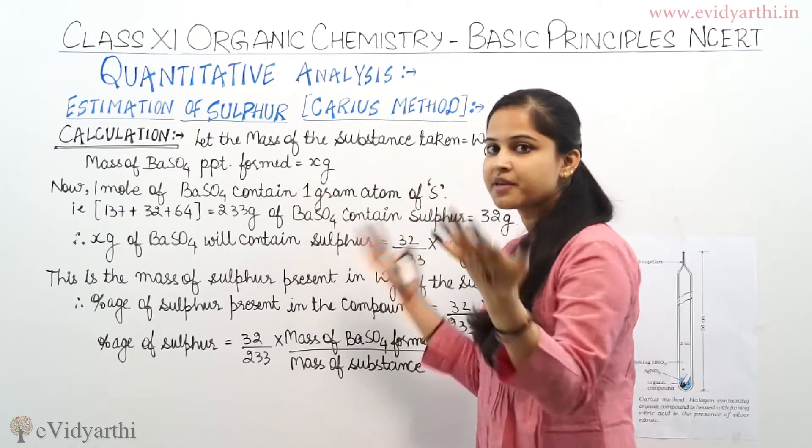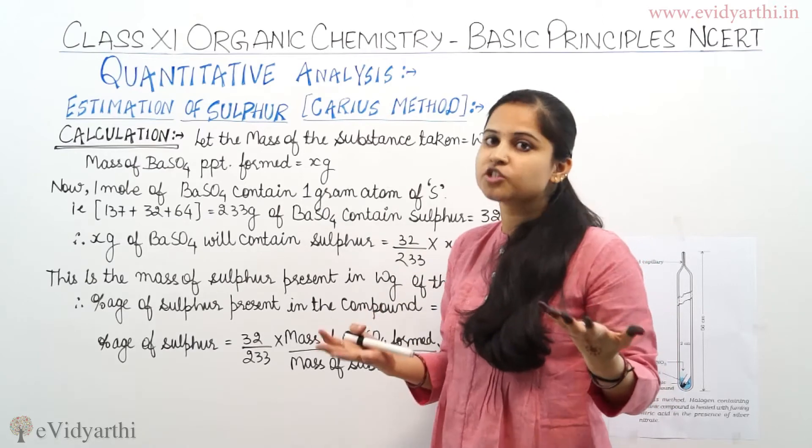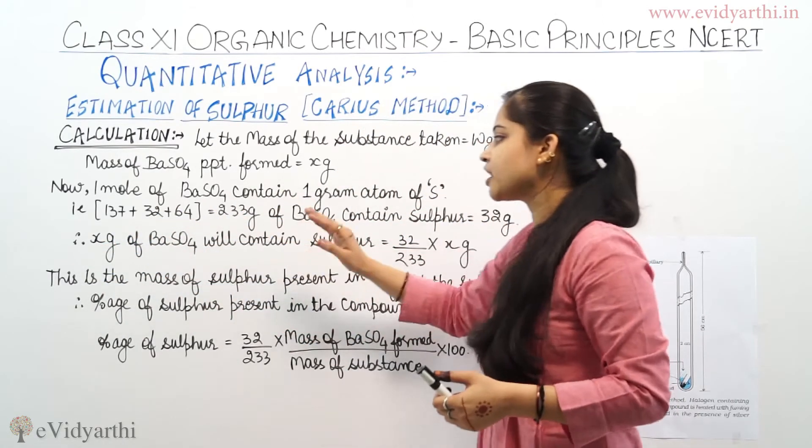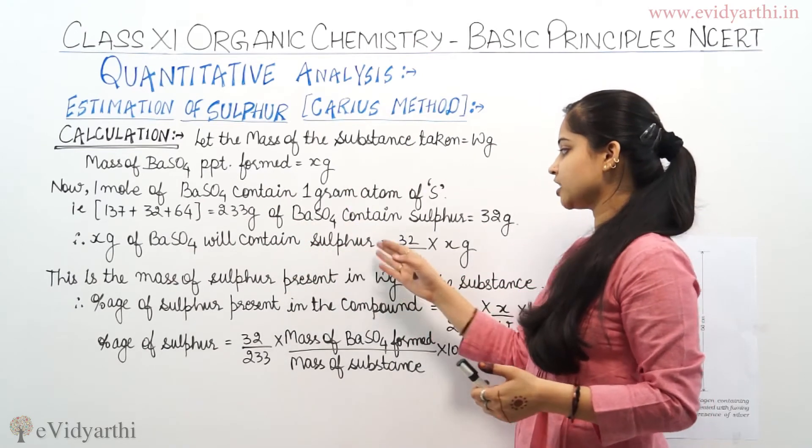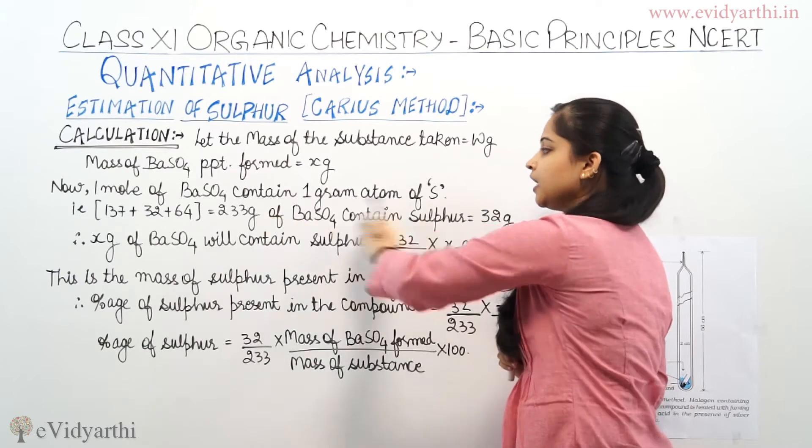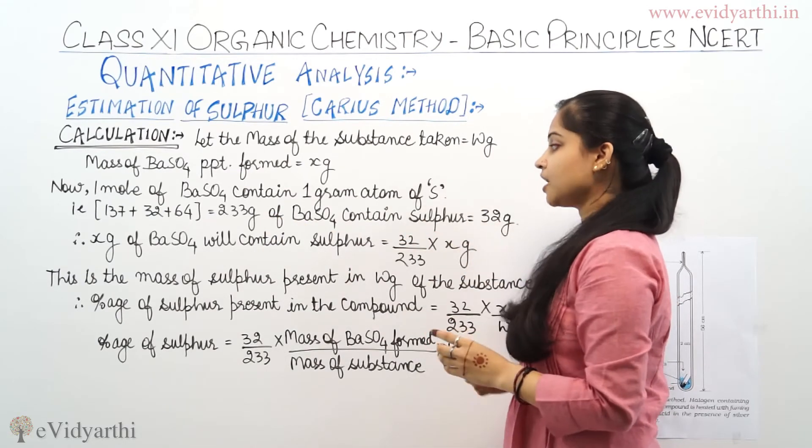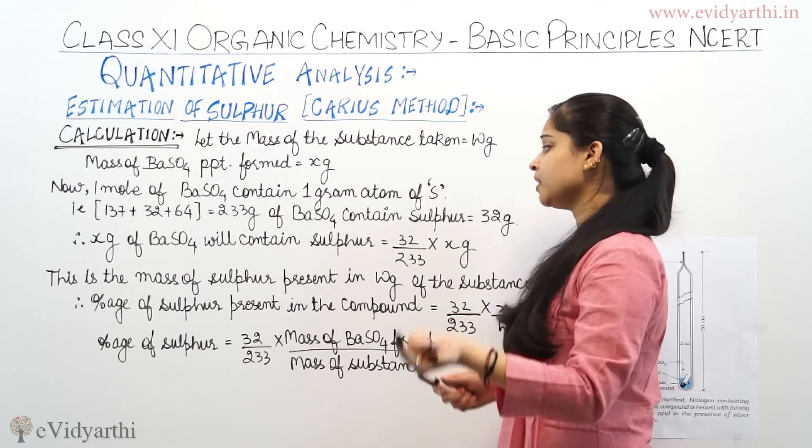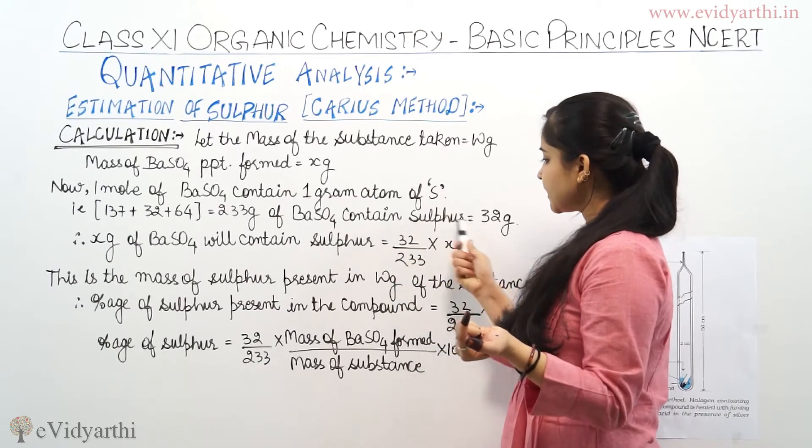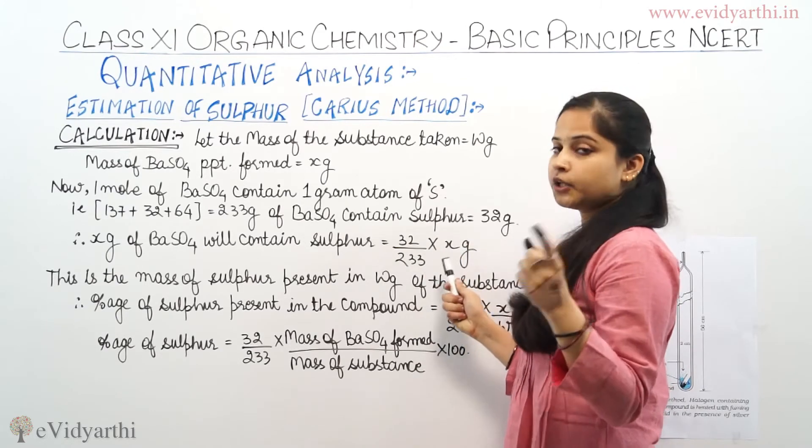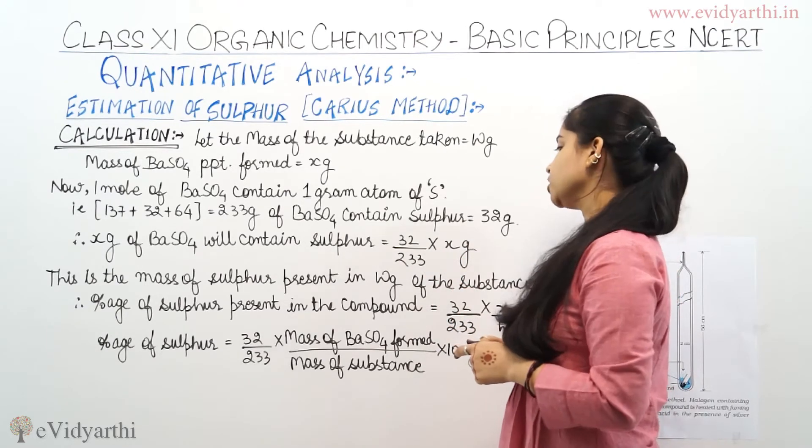So, x grams of BaSO4 will contain how much sulfur? Therefore, x grams of BaSO4 will contain sulfur equal to 32 divided by 233 times x grams. This is the mass of sulfur.